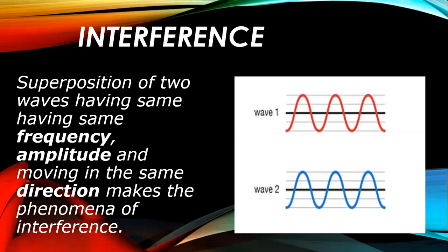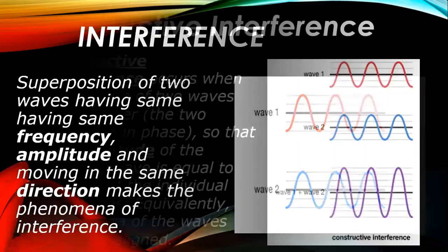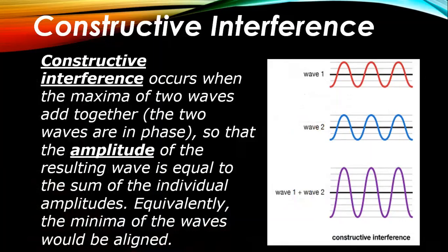Now let's see: if these two waves are superimposed and the resultant wave increases, what do we say? When these two waves are superimposed, you will see that the resultant wave is greater than the individual waves. The upper portion of the wave is called the crest, and the lower portion is called the trough.